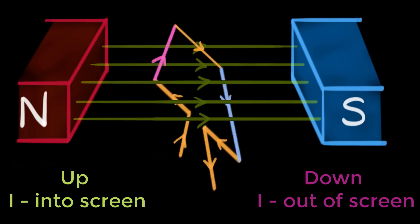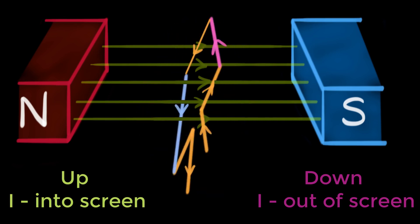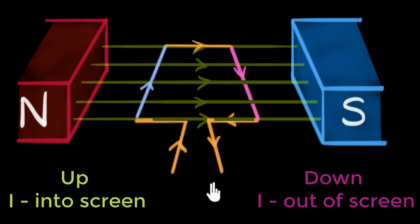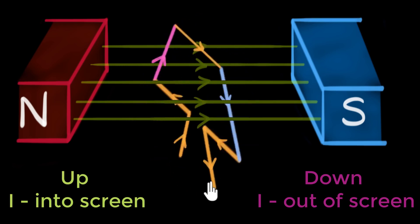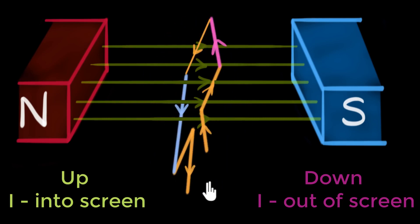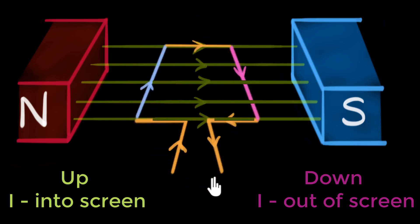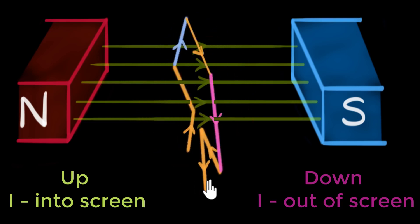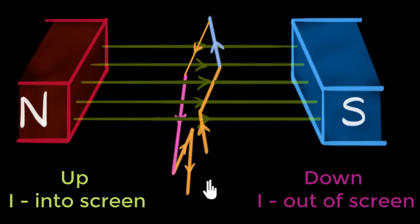Looking at the entire animation, every time the coil is perpendicular to the magnetic field, the current direction keeps changing. In the animation I'm pausing when the coil is perpendicular to the magnetic field so we can see the current flipping its direction. But in reality, the coil is pushed continuously — there is no stopping or jerking motion.